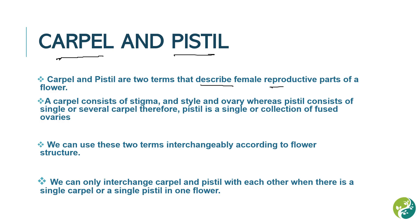So what is carpel and pistil? Carpel and pistil are two terms that describe the female reproductive parts of a flower. A carpel consists of stigma, style, and ovary — the structure we already know. The stigma is at the top, the style is the hollow structure, and the ovary is the swollen structure at the base.